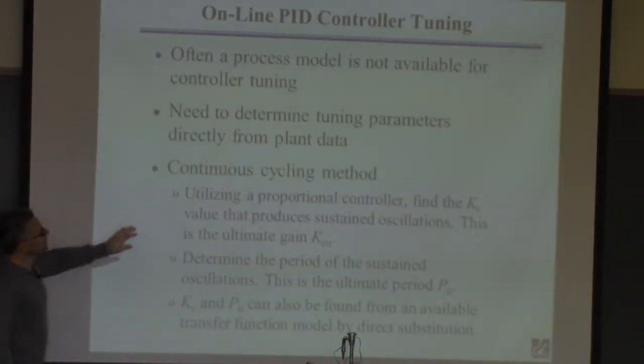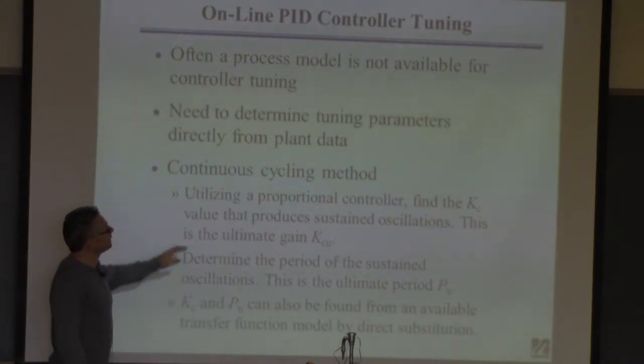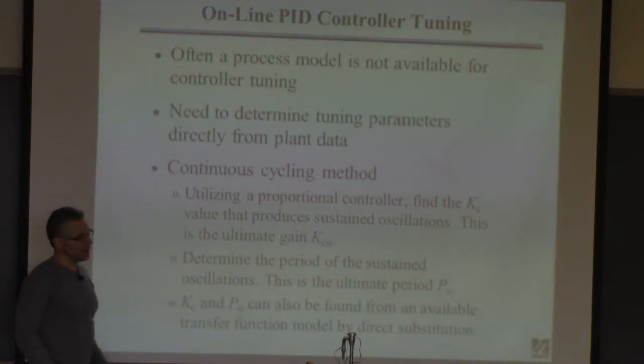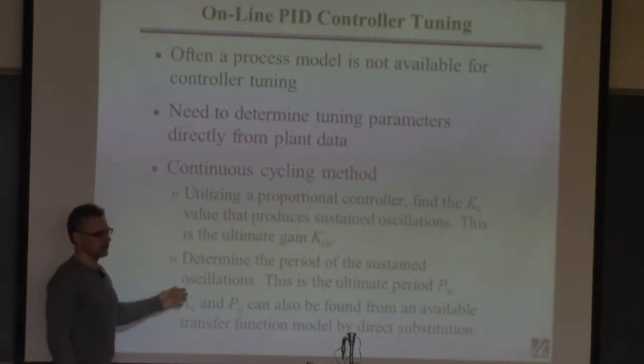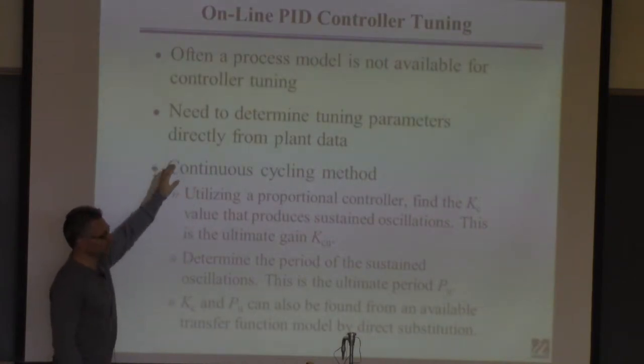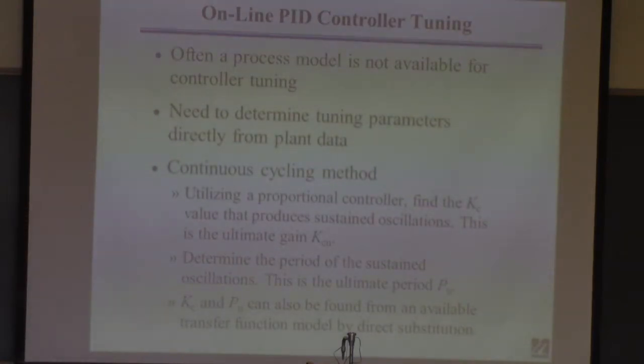In the book, they also show that you can do this without a model. They talk about it very briefly. There's a method that's very commonly built now in distributed control systems called relay feedback. You can actually put relay feedback into the system and extract this information automatically without having a model, and without causing these wild oscillations. I'm just saying there's a way to implement this, but it's really beyond the scope of time what we have to talk about.